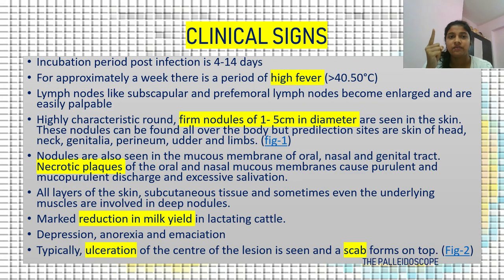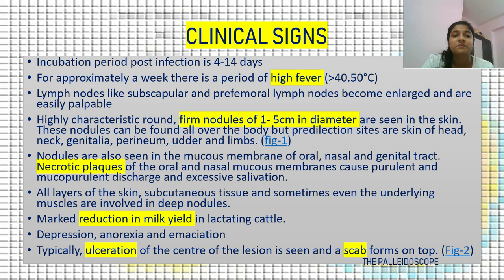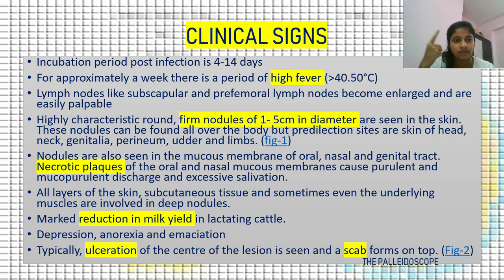Clinical signs: The incubation period post-infection is 4 to 14 days. For approximately a week there is a period of high fever, more than 40.5°C. Lymph nodes such as the subscapular and pre-femoral lymph nodes become enlarged and are easily palpable. Highly characteristic round firm nodules of 1–5 cm in diameter are seen in the skin all over the body. Predilection sites are the head, neck, genitalia, perineum, udder and lungs.